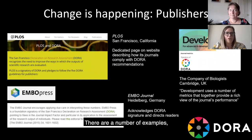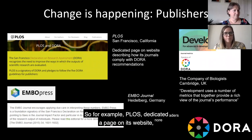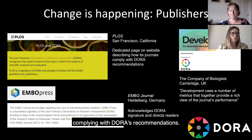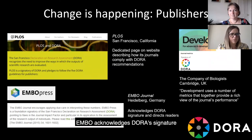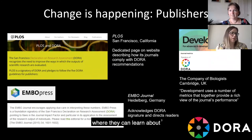There are a number of examples highlighting change that's happening at publishers. For example, PLOS has dedicated a page on its website describing how its journals are complying with DORA's recommendations. EMBO acknowledges DORA's signature and directs readers to a page with more information where they can learn about the responsible use of metrics.